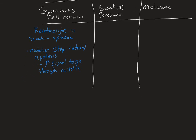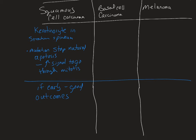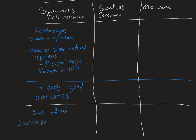In terms of prognosis, if it is caught early, there are good outcomes. Squamous cell carcinoma is one of the most treatable types of cancer — you can have it on your skin for several years, they cut it out, and you're fine. As for the cause, we think this one is related to sun exposure, and it is found on sun-exposed skin. You'll find out why that's interesting in just a minute.